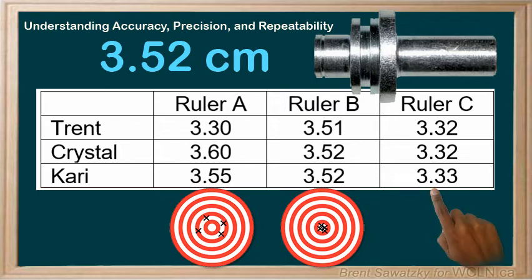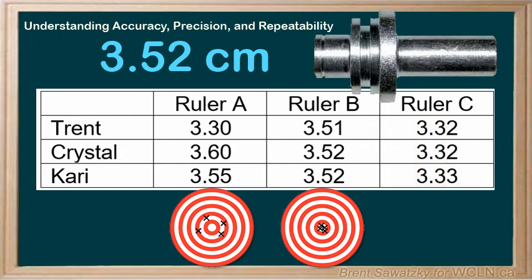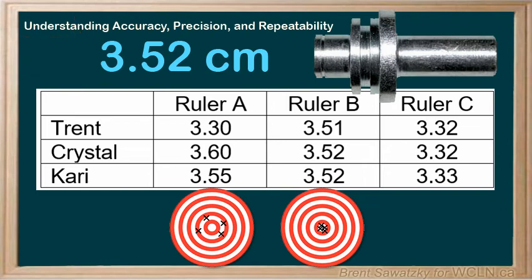Let's switch to ruler C. We can see that the repeatability is great again — everyone agrees on the first two digits. But the answers are all wrong. We know the part is 3.52 centimeters, and these measurements are all closer to 3.3 centimeters. Clearly, we have an accuracy problem here. But the precision is quite evident — it's a very precise tool, and all the answers are close to each other. Still, the accuracy is off.